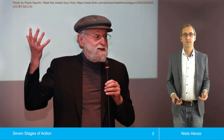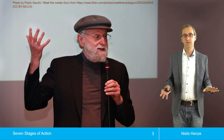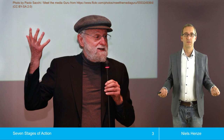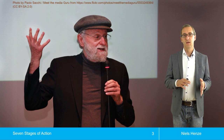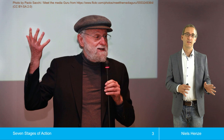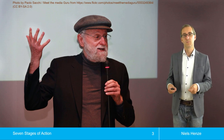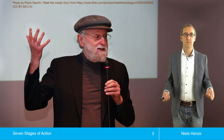Don Norman is an American scientist, and with this model — the seven stages of action — he also tries to close a gap between models that enable us to predict users' behavior on one side and mental models on the other: models that describe what happens in a user's or a developer's mind.